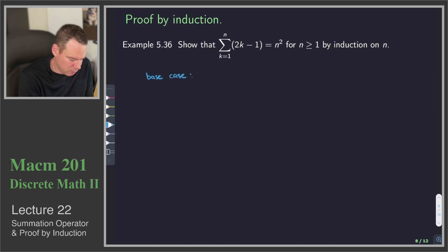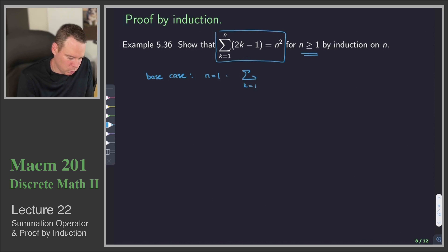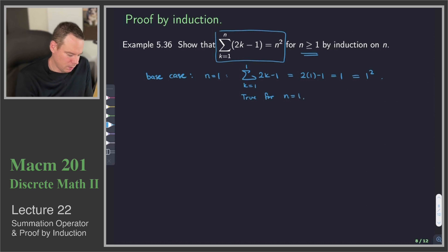We're going to start with our base case. Our statement is that this is true for all n greater than or equal to 1. So our base case is what happens when n equals 1. When n is 1, we get the sum from k equals 1 to 1 of 2k minus 1, which is just 2 times 1 minus 1, or 1. And that is equal to 1 squared, so the statement is true for n equals 1.